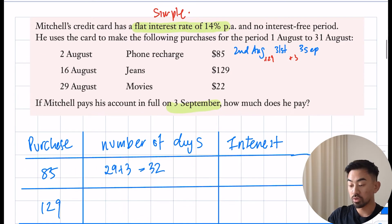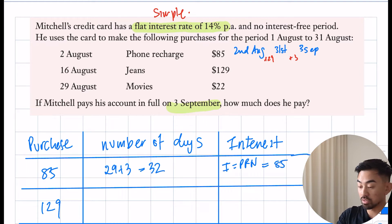In total this is going to be 29 plus 3, that's 32 days. The interest is simple interest, so I = PRN. That's simple substitution where my principal is 85 times my rate which is 0.14. Now you need to divide this by 365 because it's calculated every single day, times by 32 days. That's the first row done and I'm just going to leave that as a calculation and add it all together at the end.